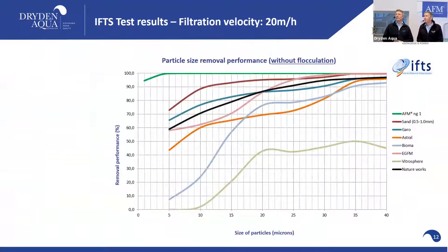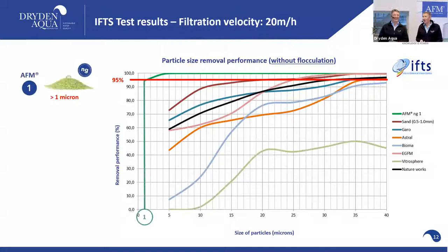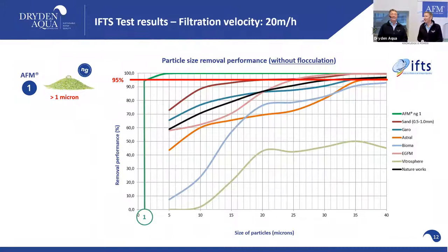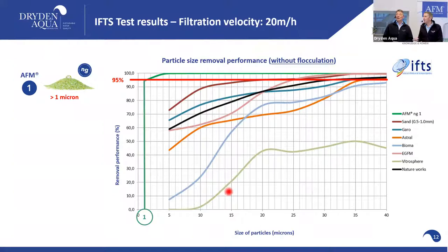When comparing media, we look at filtration performance. AFM NG provides nominal 95% filtration down to one micron — with the convenience of a sand filter. We use 95% as the benchmark because absolute filtration is never achieved; it's always nominal. We target 95% because we always aim for the best.